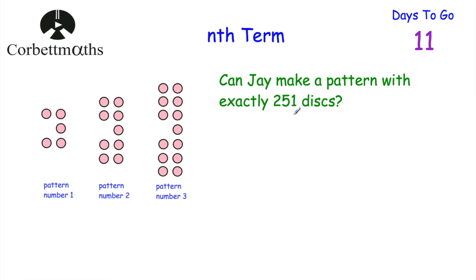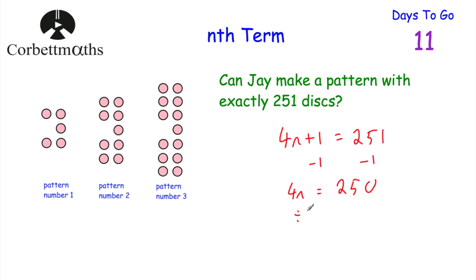We're asked: can Jay make a pattern with exactly 251 disks? We know the nth term is 4n plus 1. Setting 4n plus 1 equal to 251: take away 1 gives 4n equals 250, then divide by 4 gives n equals 62.5. Since that's not a whole number, Jay can't make a pattern with exactly 251 disks — the 62nd pattern would have under 251 and the 63rd would have above 251. So the answer is no.